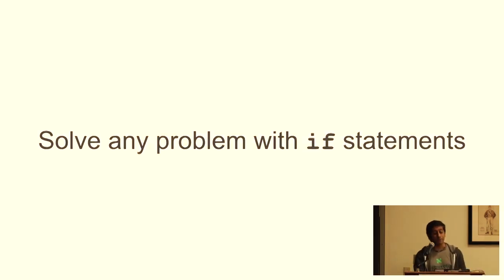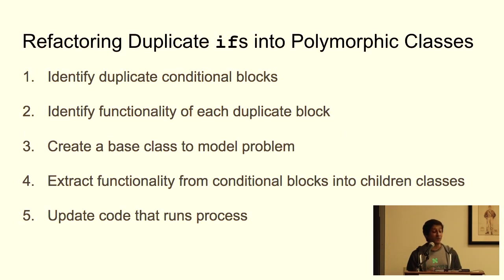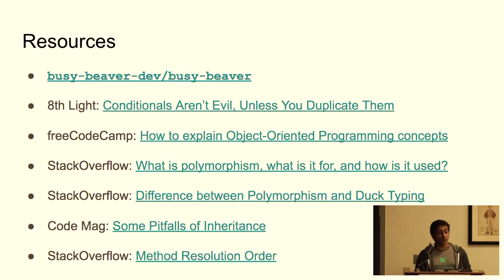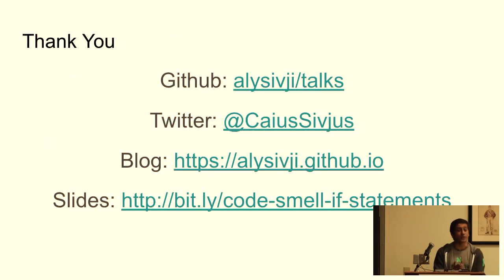To recap: we can solve any problem with if statements, but if we have too many, it can result in code that is hard to follow or difficult to modify. We talked about a five-step process to refactor duplicate if blocks into polymorphic classes. But remember, we're not going to spend time refactoring if the payoff isn't worth it. Here's a list of resources I found while putting together this talk. Thank you for your time — I'll take some questions.